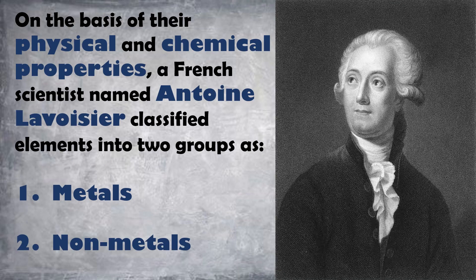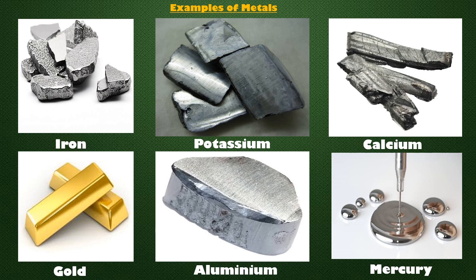A French scientist named Antoine Lavoisier classified elements into two groups: metals and nonmetals. Examples of metals include iron, potassium, calcium, gold, aluminium, and mercury.